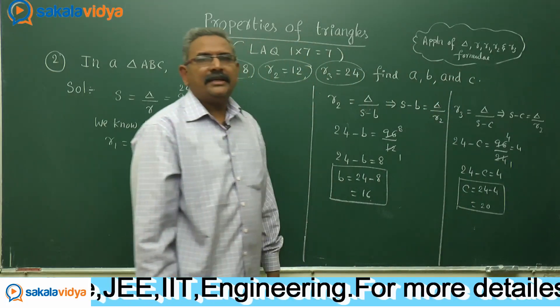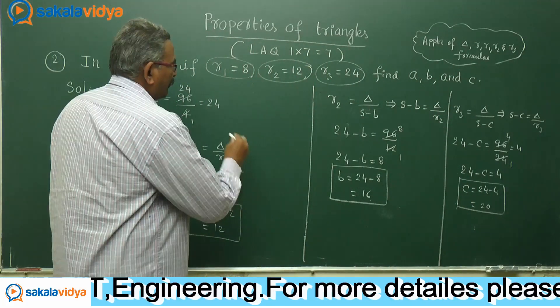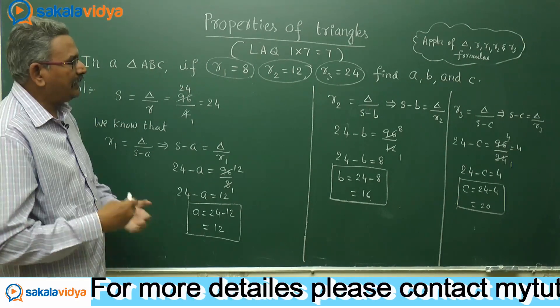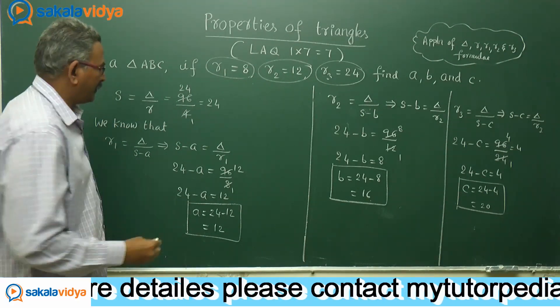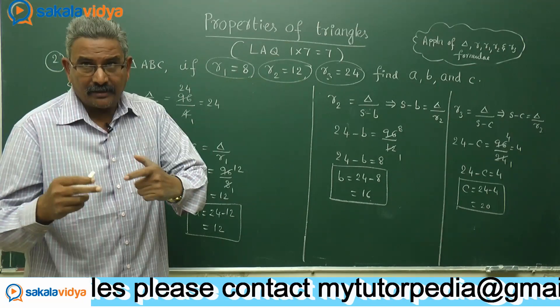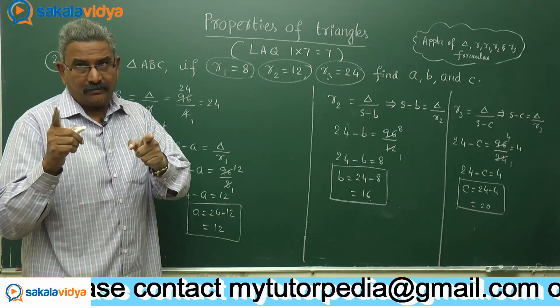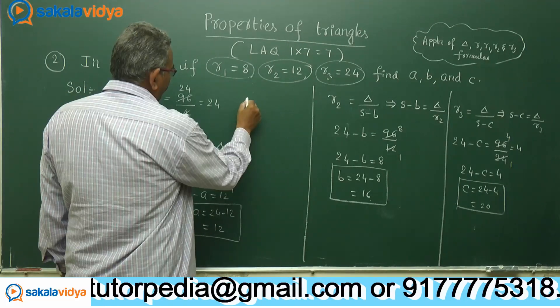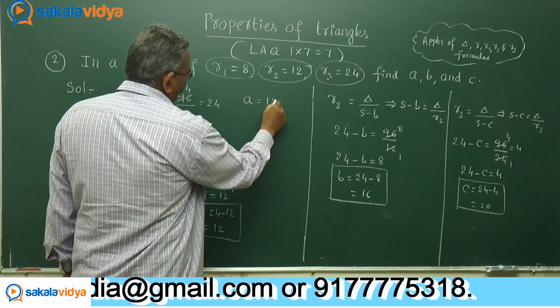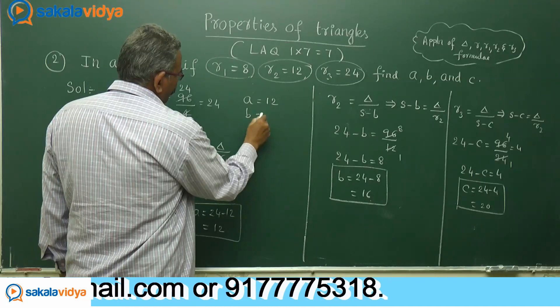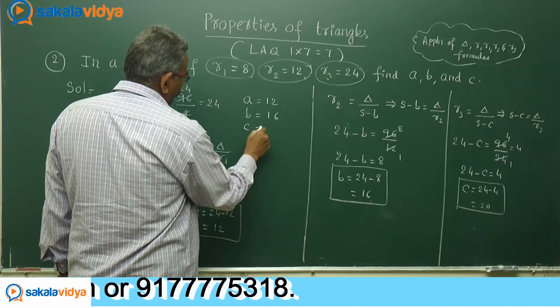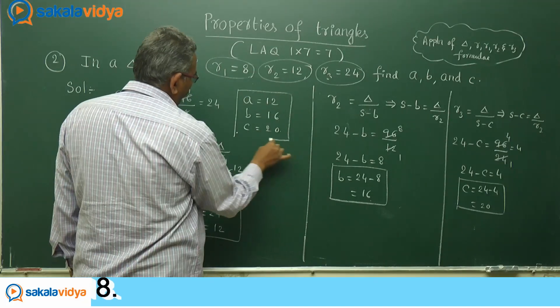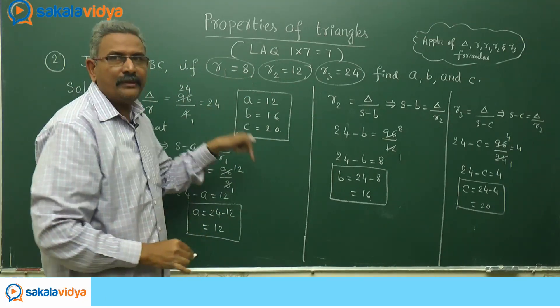Therefore, a, b, and c values have been obtained. a equals 12, b equals 16, c equals 20. In this way, a, b, c values have been obtained.